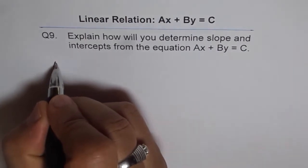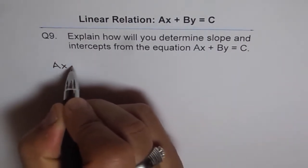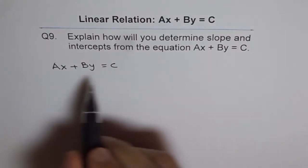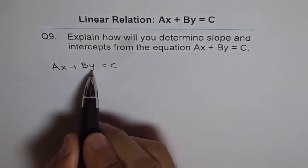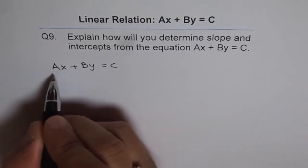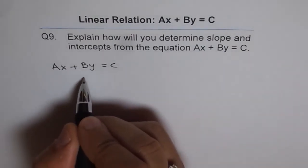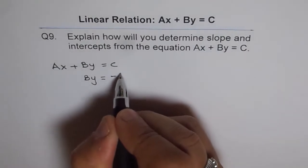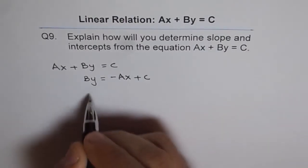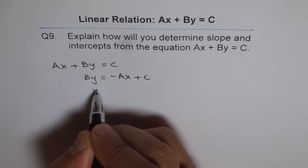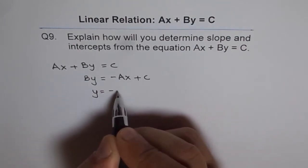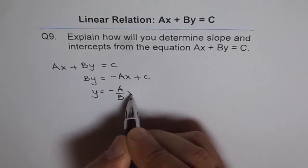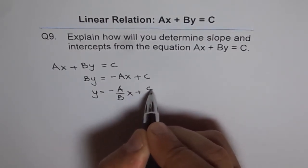For slope we can write the equation as AX plus BY equals to C. We will isolate Y. So we can take away AX from both the sides and then we get BY equals to minus AX plus C. And dividing by B we get Y equals to minus A over B times X plus C over B.